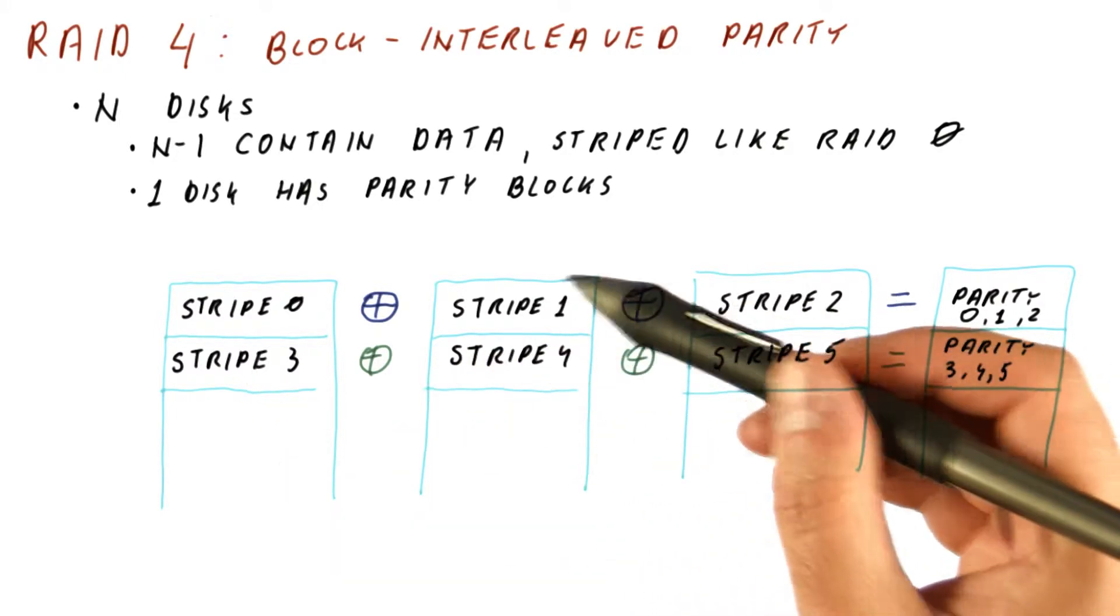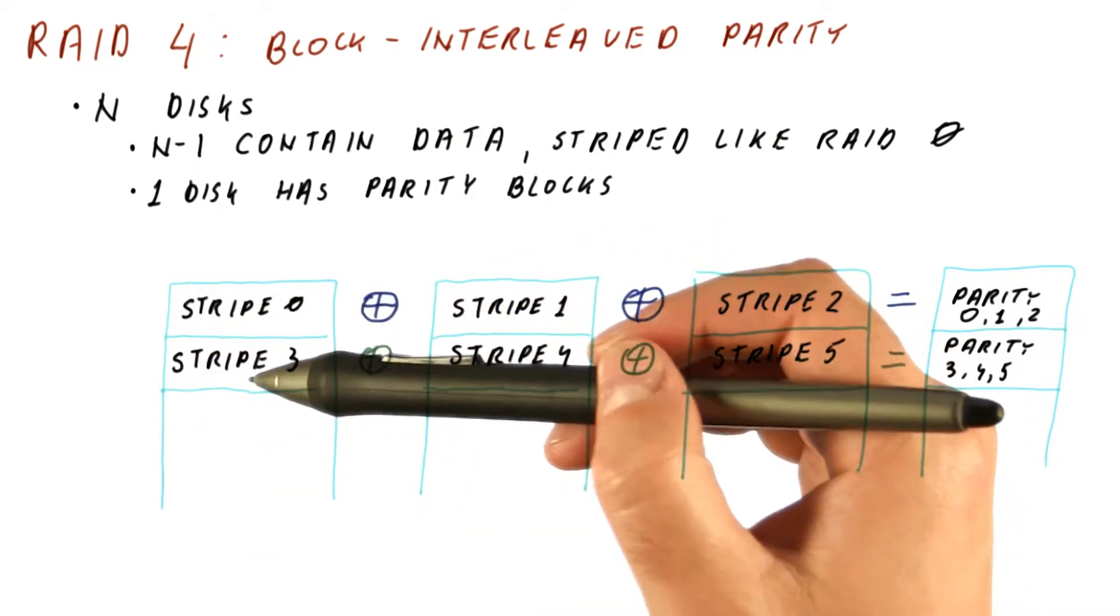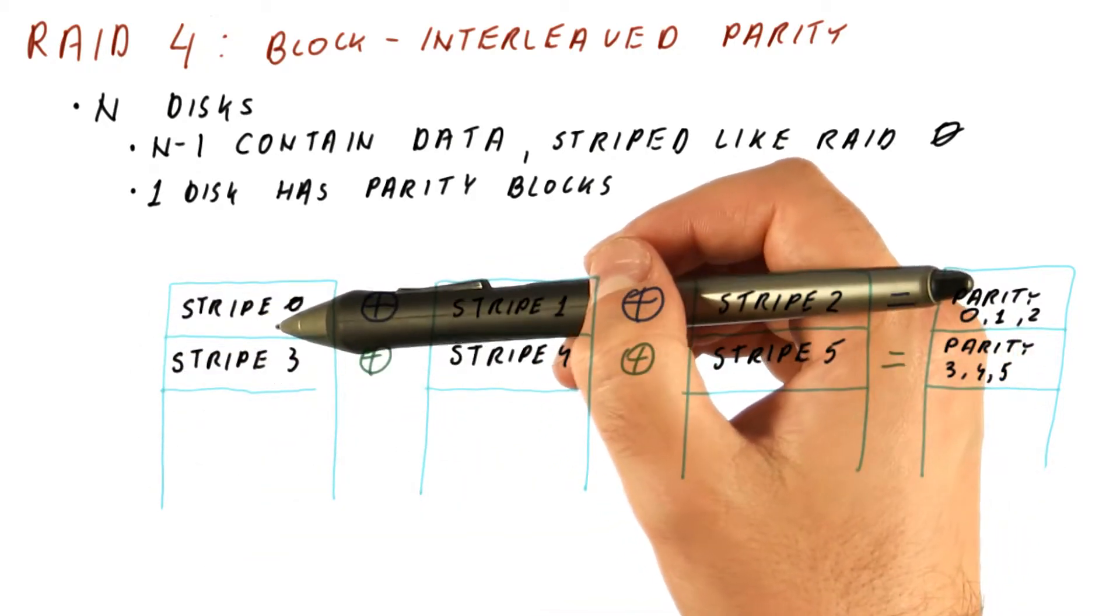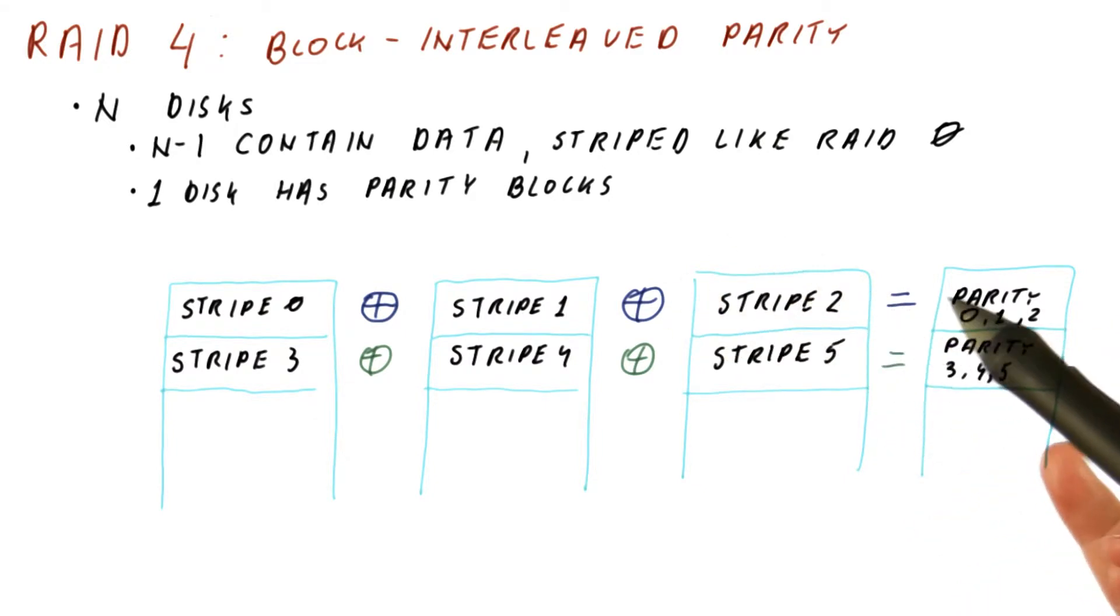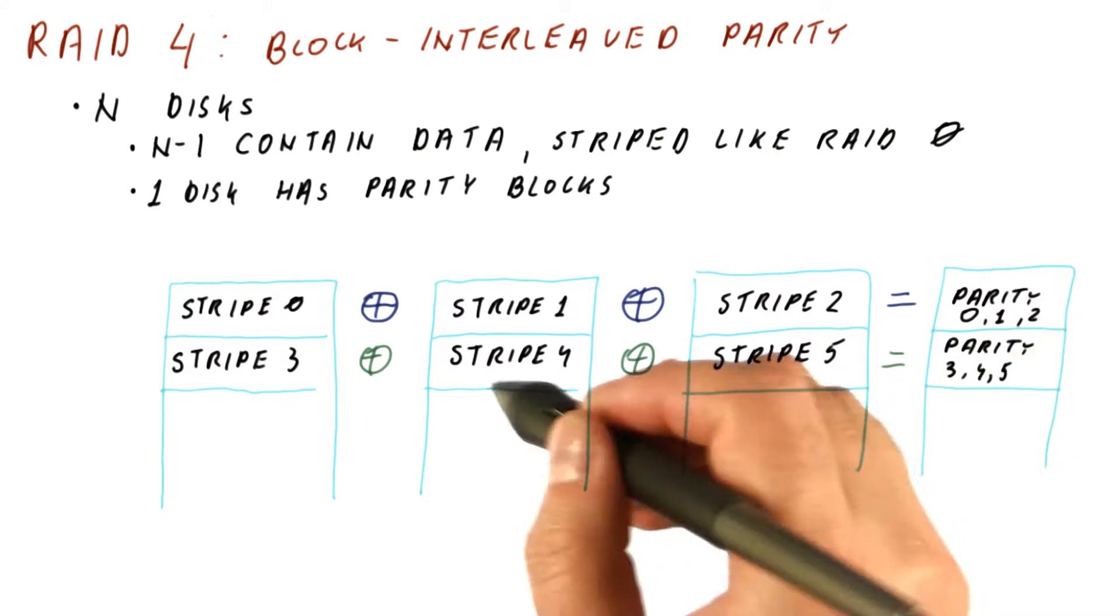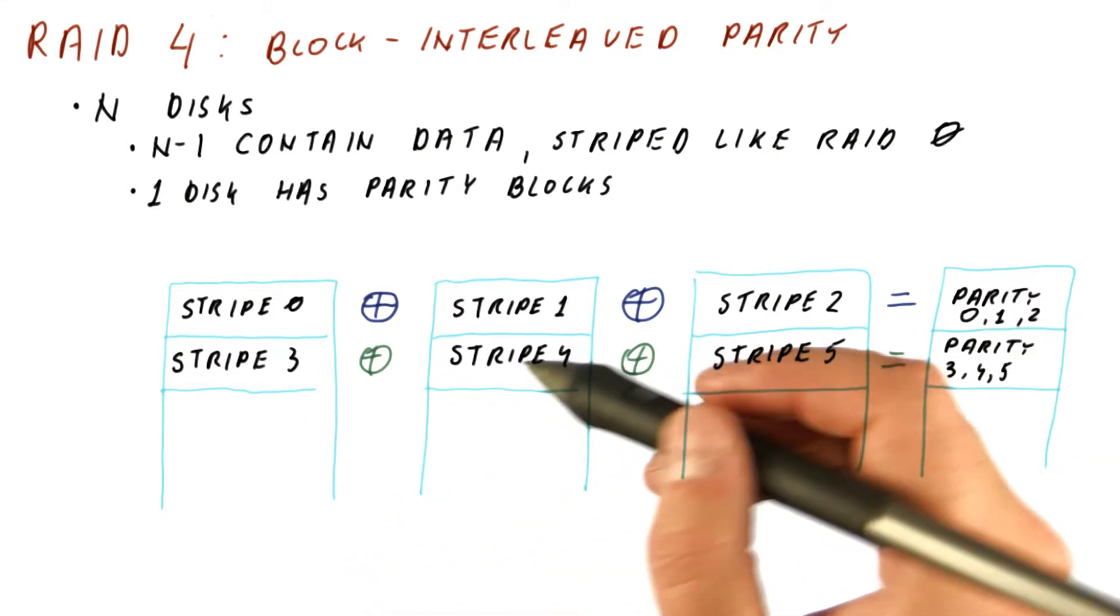So effectively, now we can tolerate the failure of any one disk. But the cost is not two times as many disks as we need to store the data. Here, for example, we are paying only one quarter of the whole system on parity, and three quarters on the data. Whereas with mirroring, we would have spent half of the overall capacity of the system on the mirroring.